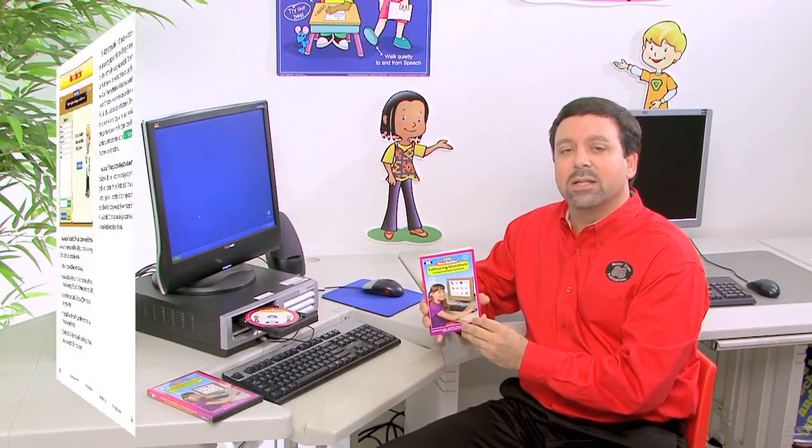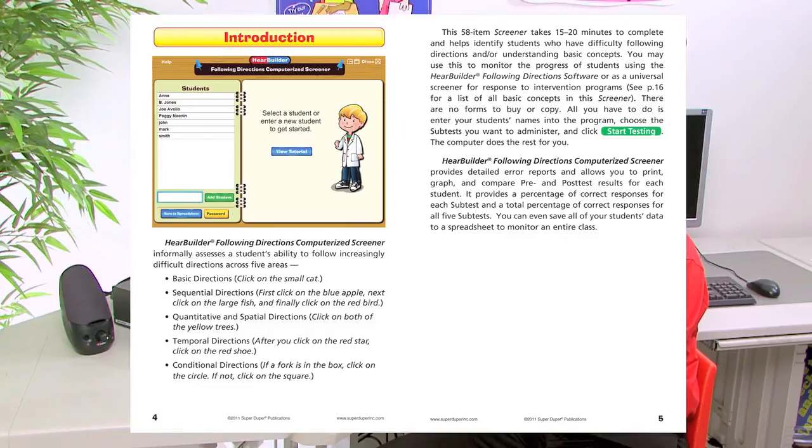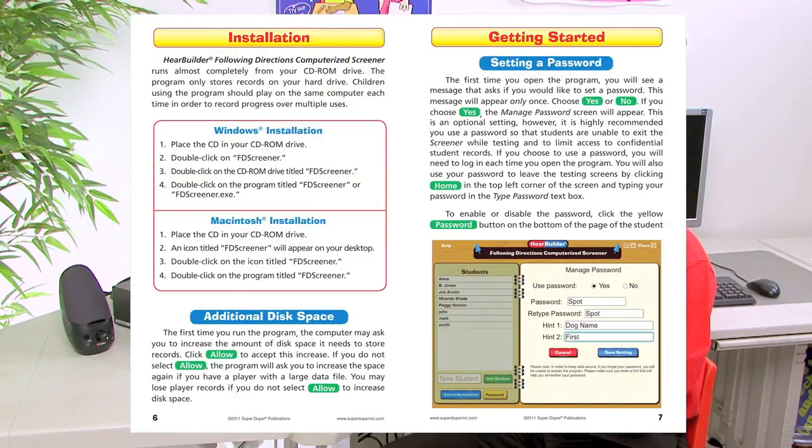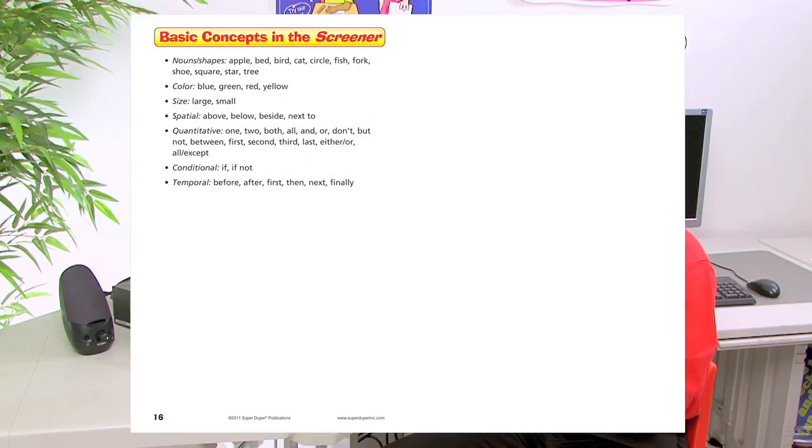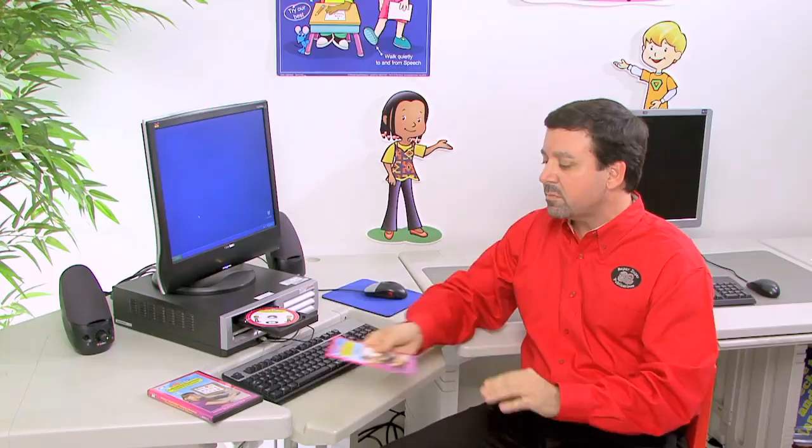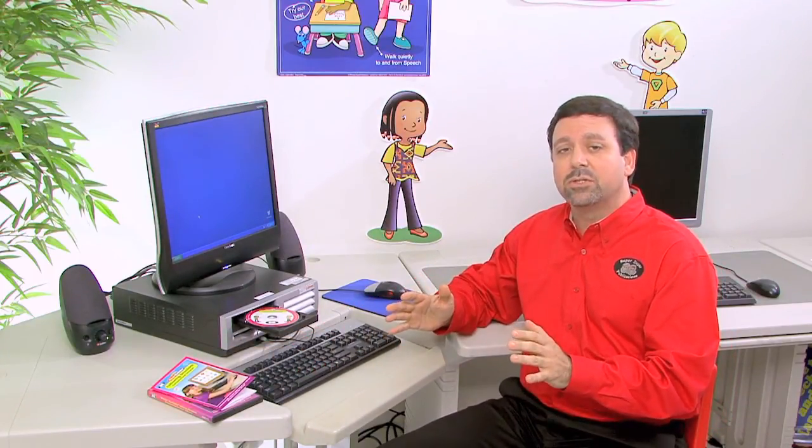Now in the instruction booklet, it's going to have all the pertinent information as far as how this system works, as well as those basic concepts that we mentioned before. They're all going to be listed right here on page 16 of the instruction manual. Now you can also use this not only as a screener to identify those students that have difficulty following directions, but you can also use it to monitor the progress of those students that are currently receiving response to intervention services, and or you can use this to monitor the progress for those students who are using the HearBuilder Following Directions software.